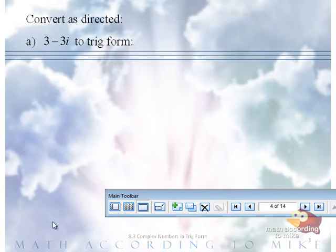Earpiece in, let's rock. Convert as directed, part A, 3 minus 3i to trigonometric form.